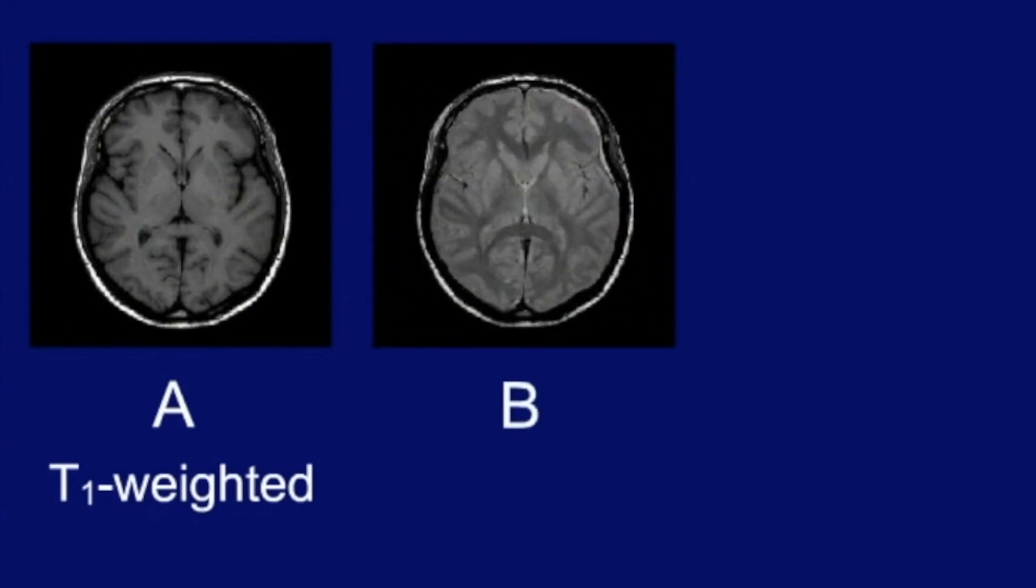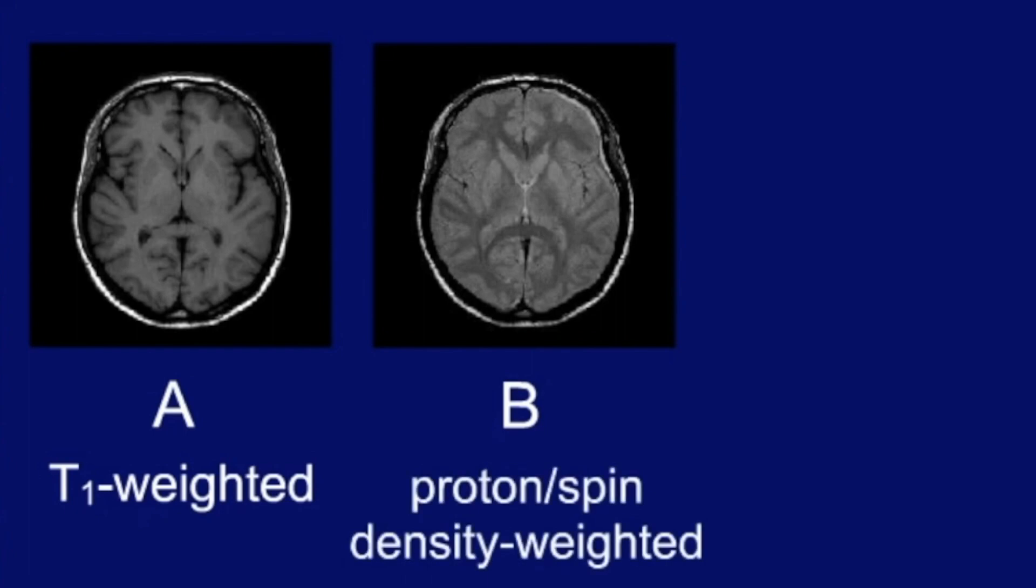In B, CSF is still dark, even though its signal intensity is slightly higher than in the T1 weighted image. Contrast between the grey and white matter is reversed. This is a proton or spin density weighted image. And as grey matter has a higher water content, in other words, contains more protons, its signal intensity is higher than that of the white matter.